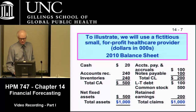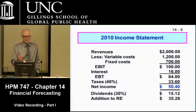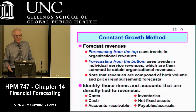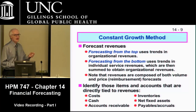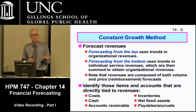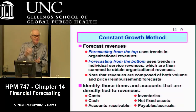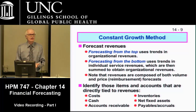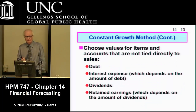Here's a typical balance sheet of a for-profit healthcare provider and a typical income statement with revenues, variable costs, and so on. The constant growth method essentially takes these accounts and ties them to revenues. Because as revenues go up, expenses go up, a lot of balance sheet items go up — the amount of cash, the amount of inventories. A lot of these things tend to be affected by revenues. That's the basic assumption of the model.